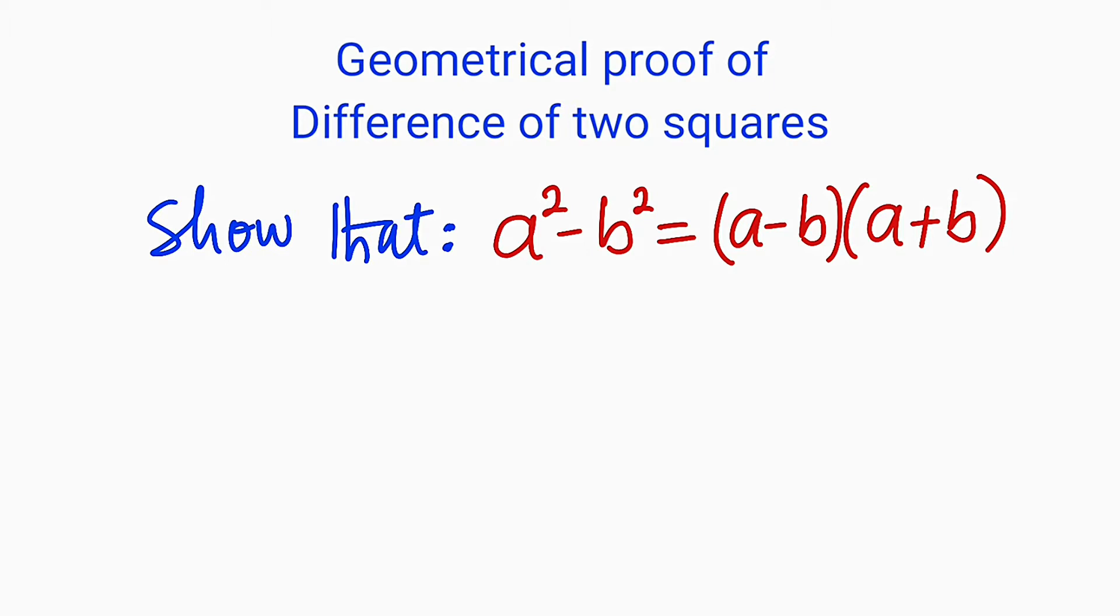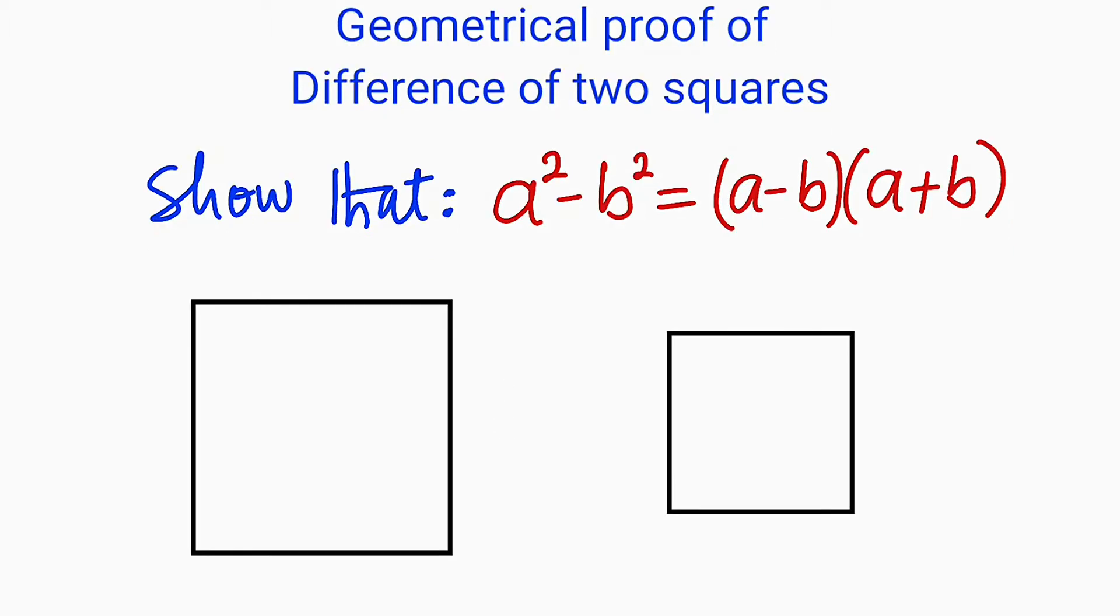First of all, let us represent a squared and b squared with some plane figures. All right, let these plane figures represent a squared and b squared. So let me just label it. We want to take away this plane figure from this one right here. So this is a squared.